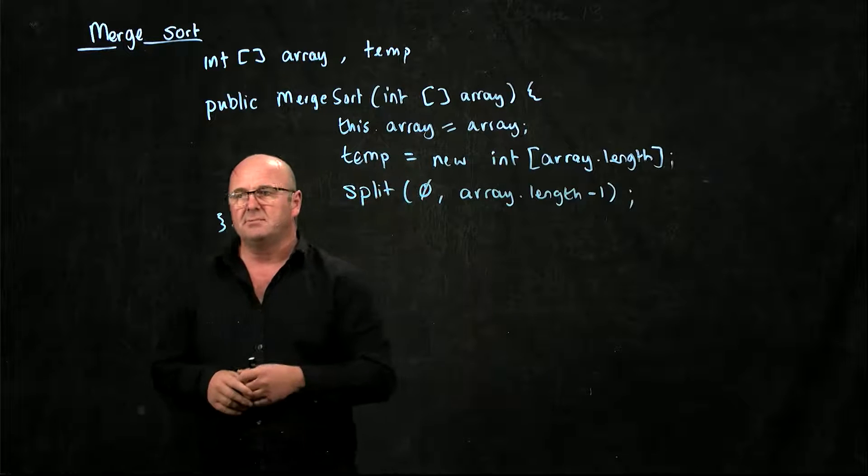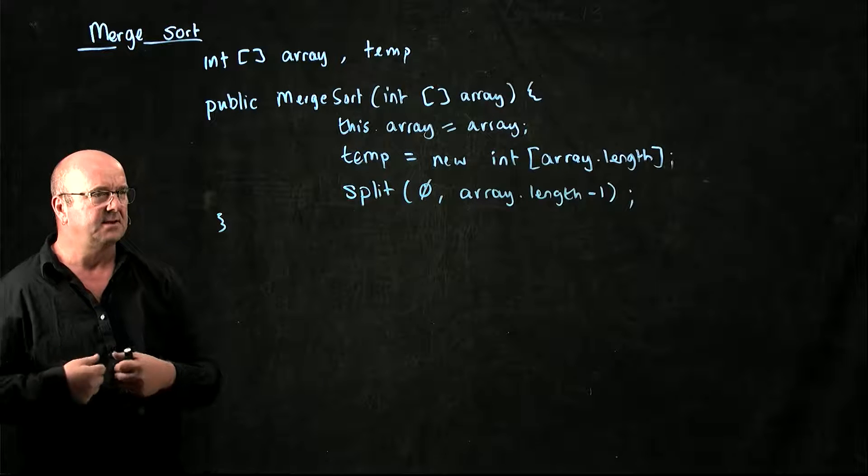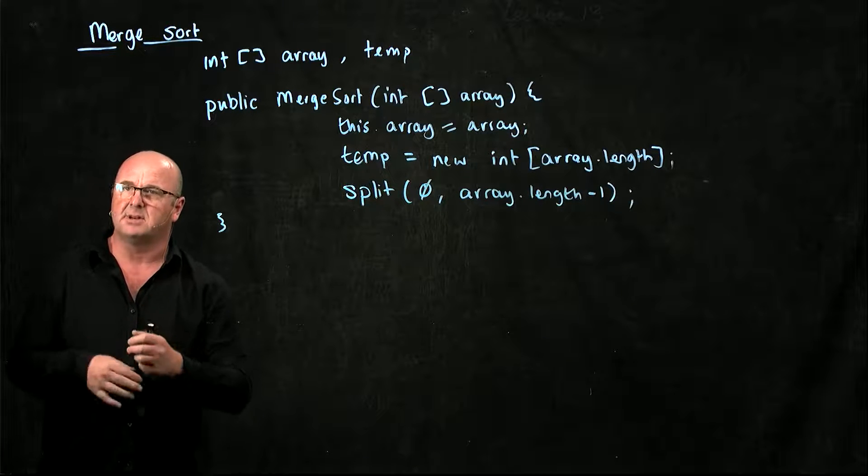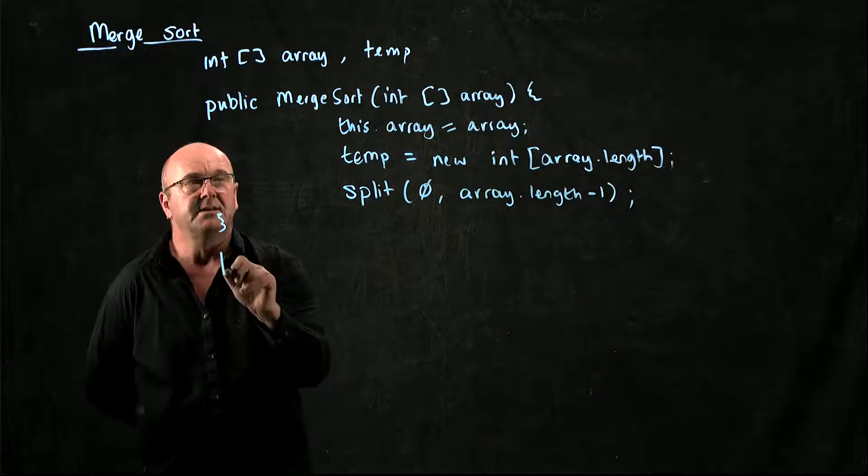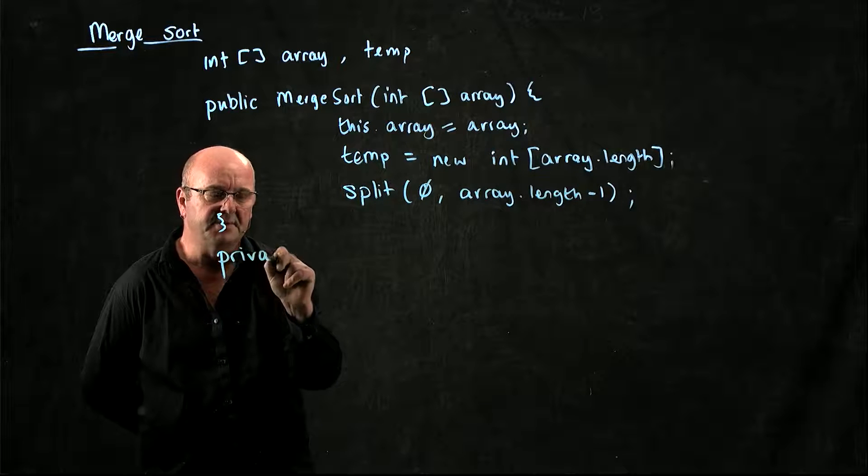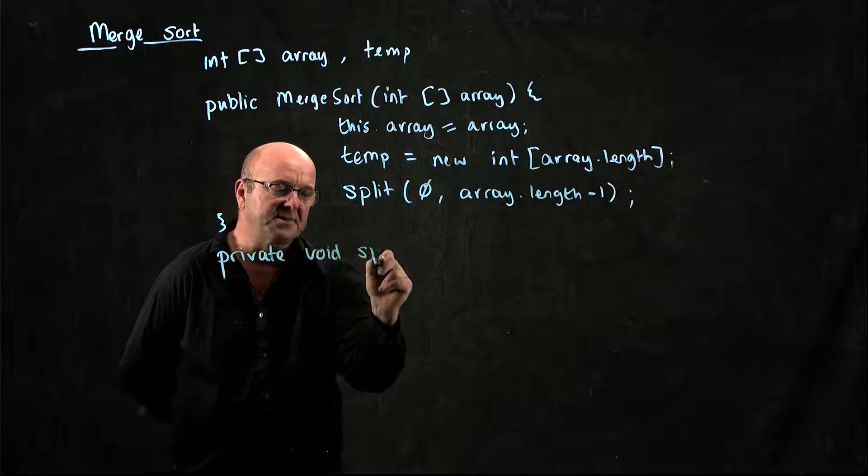So what we're actually doing with our merge sort is we're manipulating array indices. We're not actually going to manipulate the array elements directly. So we're going to have, for example, a private method called split.